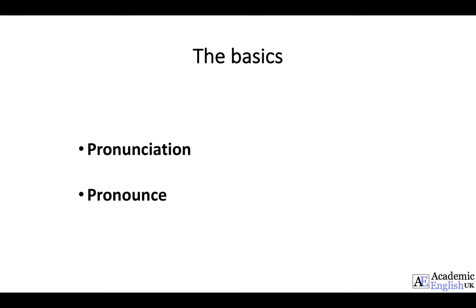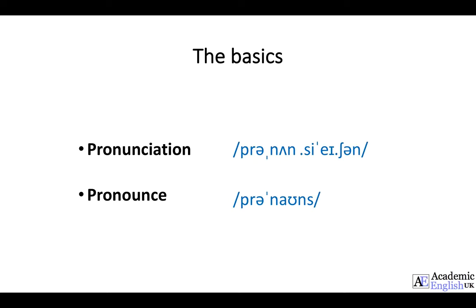Quite commonly I find my students pronounce the first word wrongly. The reason is students often say 'pronunciation' as if it matches 'pronounce'. But when we look at the phonetics, we see that there's actually a difference. The verb is 'pronounce', but the noun is 'pronunciation'. So to say this word correctly, you say: pronunciation. And then the verb is to pronounce.